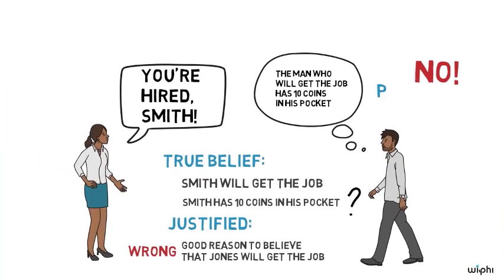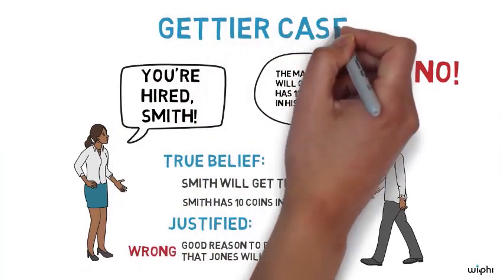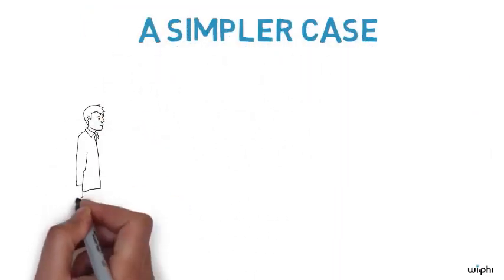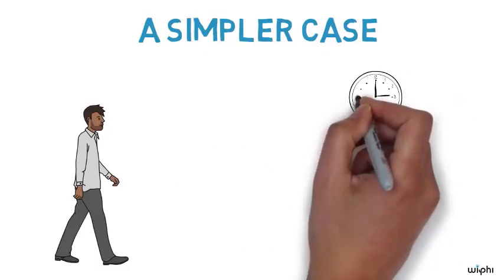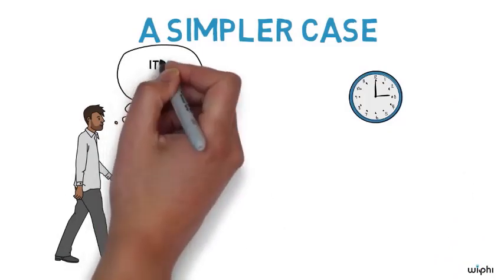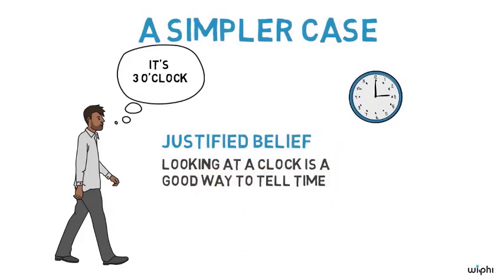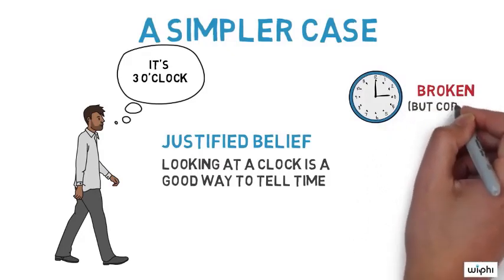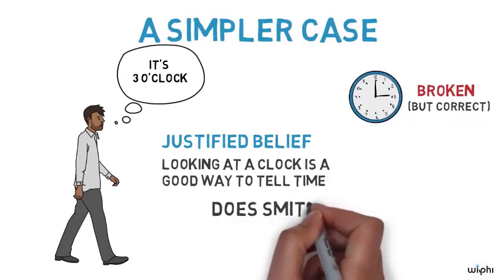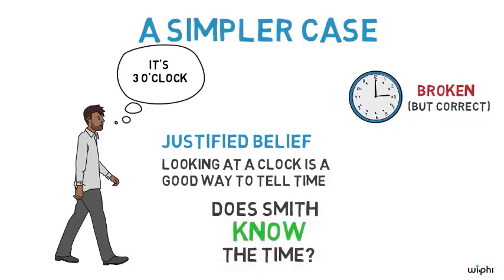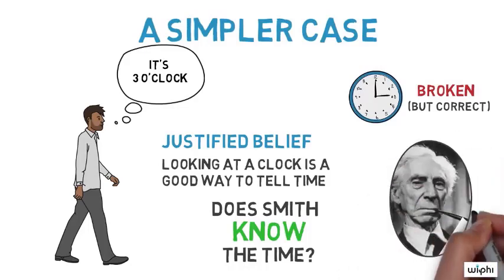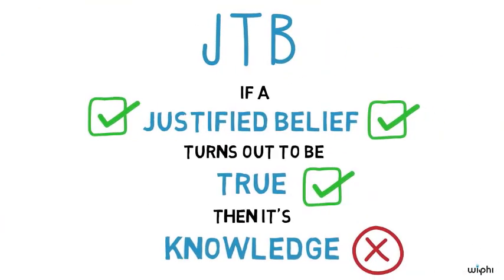Philosophers now use the label 'Gettier case' for any story that illustrates the possibility of justified true belief without knowledge. It turns out that there are many such cases, often simpler than Gettier's original. Suppose that Smith wonders what time it is and glances at the clock on the wall, which clearly shows the time as three o'clock. Looking at the clock is a perfectly reasonable way of telling time, so Smith has a justified belief. What he doesn't know is that this clock is broken and its hands haven't moved in days. But by chance, it is exactly three o'clock right now. Does Smith actually know the time as he looks at the broken clock? Back in 1948, Bertrand Russell used this case to illustrate the possibility of true belief without knowledge. But looking back on it now, we can say something stronger: it's a case of justified true belief without knowledge. It's a Gettier case.